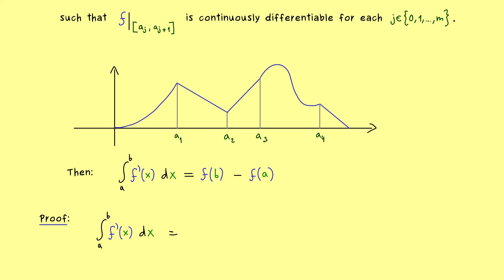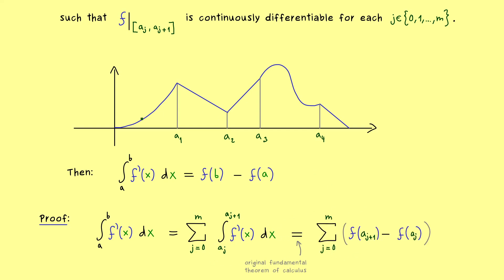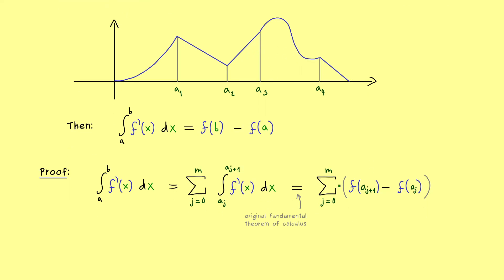The whole integral from a to b can be written as a sum over the subintervals: the sum from j = 0 to m of the integral from aⱼ to aⱼ₊₁ of f'. Since f is continuously differentiable on each subinterval, we apply the fundamental theorem to get f(aⱼ₊₁) minus f(aⱼ). Note that f is a continuous function, so each value f(aⱼ) is well defined. What we get is a telescoping sum where only the first and last entries remain, giving us f(a_{m+1}) minus f(a₀), which is simply f(b) minus f(a). And there we have it — this is the proof of the extension of the fundamental theorem of calculus.